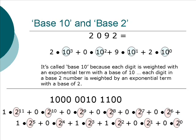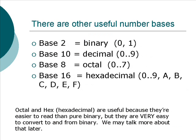Now there are other useful number bases. Base 2, we call that binary, and it uses the digits 0 to 1. Base 10 is decimal, and we use the digits 0 to 9. We also in computers use base 8, which is called octal, and it uses the digits 0 to 7. We also use base 16, which is called hexadecimal, which uses the digits 0 to 9 and the letters A, B, C, D, E, and F.